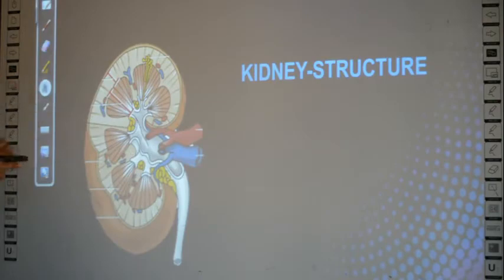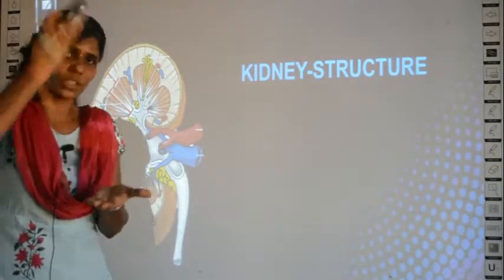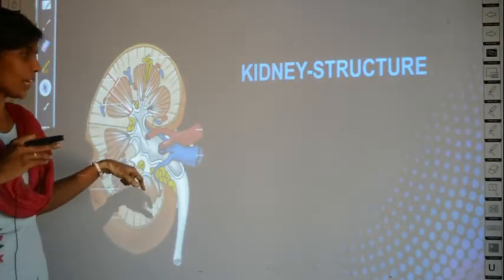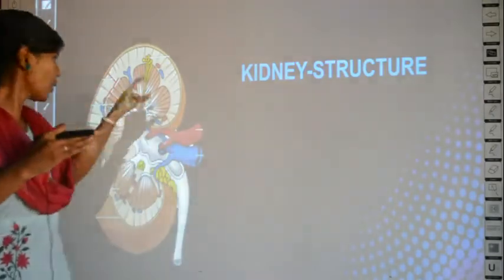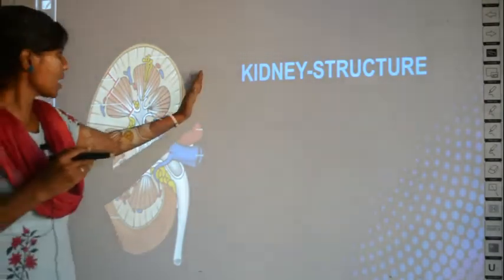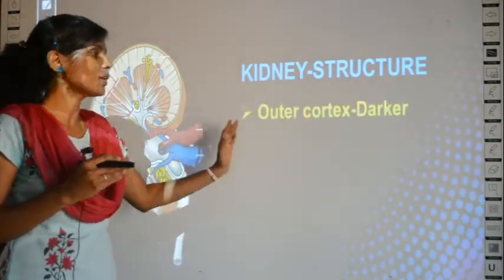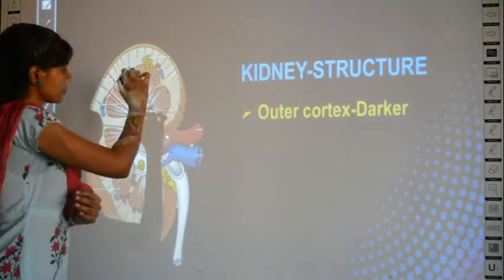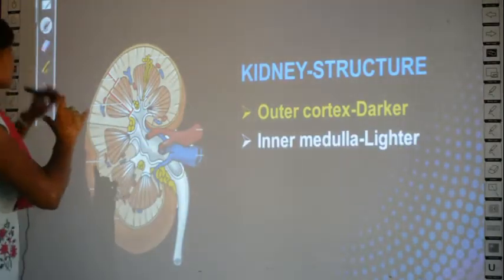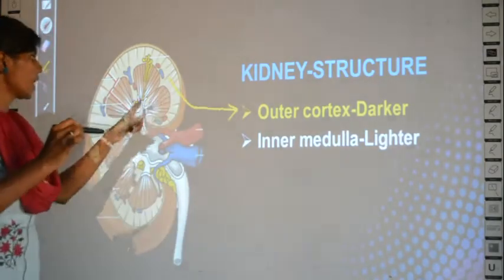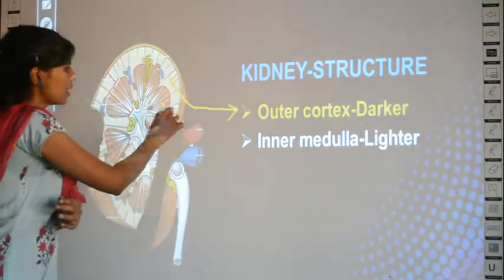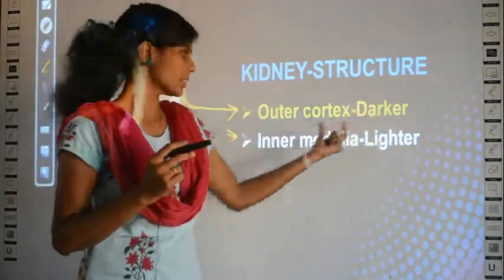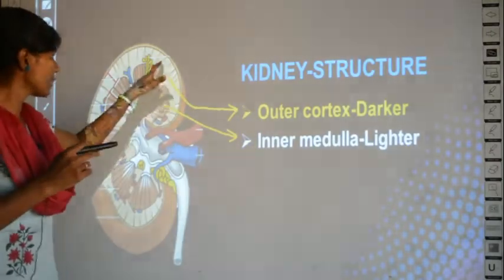Now we learn the detailed internal structure of the kidney. The kidney is bean-shaped, and if you cut it equally in half, you can see all the structures inside. There are two regions: the outer region is called the cortex, and the inner region is called the medulla. In a real kidney, the outer cortex area is darker in color and the inner medulla region is lighter in color.